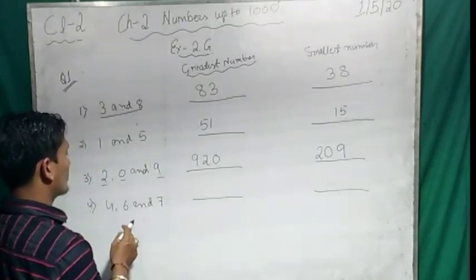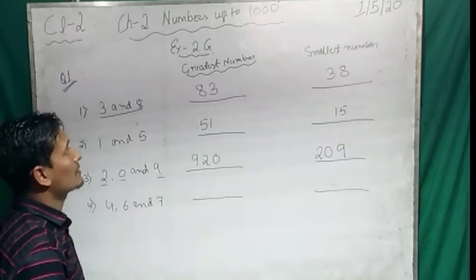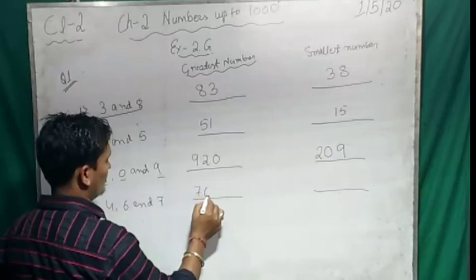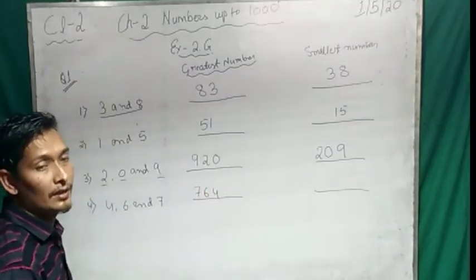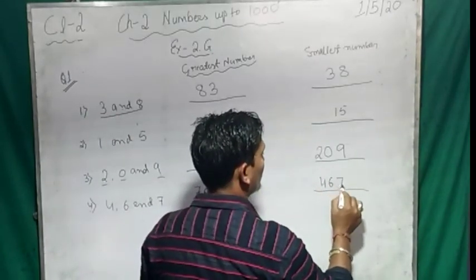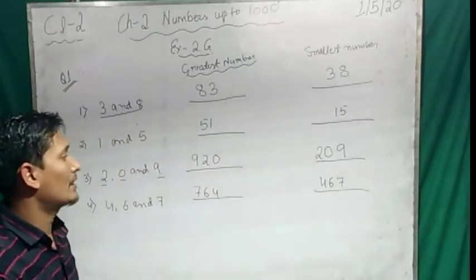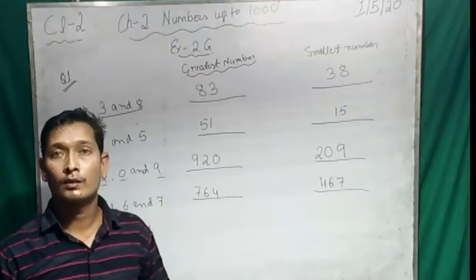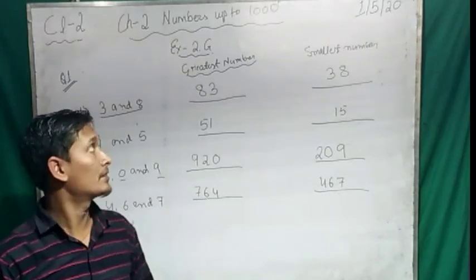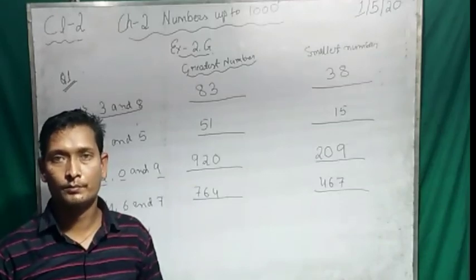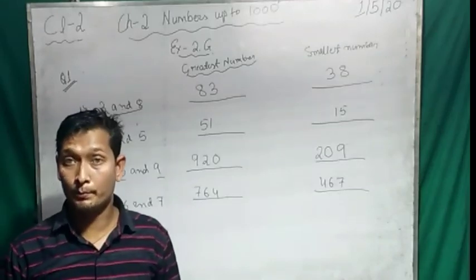Question 4: digits 4, 6, and 7. For the greatest number, start with 7, then 6, then 4 — giving 764. For the smallest, start with 4, then 6, then 7 — giving 467. Your chapter, Numbers up to 1000, is now over. Keep on practicing at home. Thank you everyone.